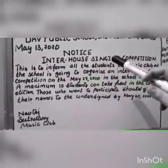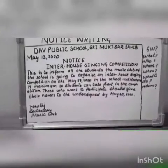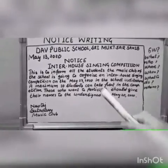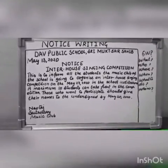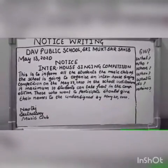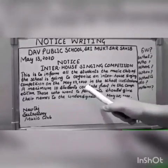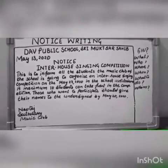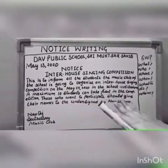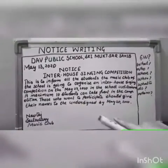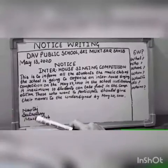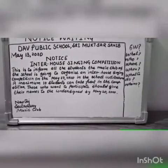The topic here is 'Inter-House Singing Competition'. When writing the body of the notice, always keep in mind the six W's: What — this notice is about organizing an inter-house singing competition; Who — DAV Public School is organizing it; Where — it will take place in the school auditorium; When — the date is mentioned; What to do — students can participate and give their names to the undersigned person; Whom — to the undersigned person. At last, add the designation and name. That's all regarding notice writing. Thank you.